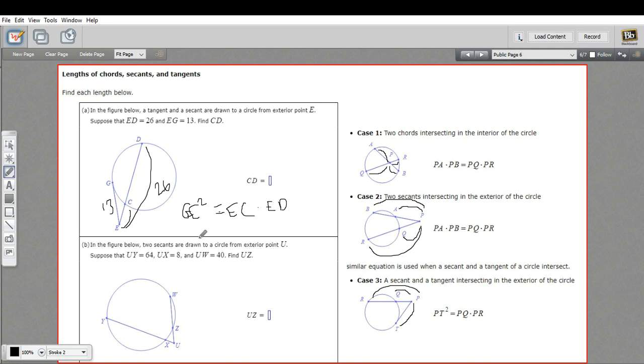So let's go ahead and fill in our numbers here. So this is going to be 13 squared equals this part we don't know, EC, so I'll call that X, times 26. So 13 squared is 169, so I'm just going to put this up here, 169 equals 26X, and then we'll just divide by 26 to get X.